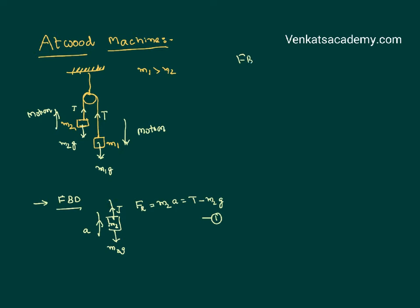Now we want to draw a free body diagram for the other body M1 of the system. Let us identify the forces acting on it: weight in downward direction, tension in the string in the upward direction, and its motion is in downward direction. I can write F resultant is M1a equal to M1g minus tension.